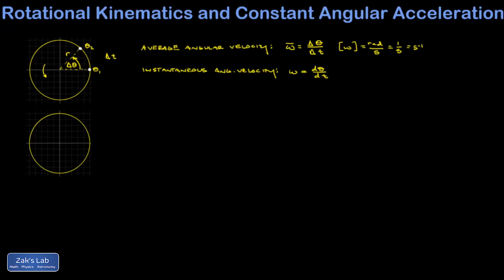The next step I want to take is to allow my rigid body to spin faster. Perhaps I look at some moment in time and my paint spot is here. And at that moment in time, I have an instantaneous angular speed of omega 1. Then I watch for a moment as my disk speeds up. And at some later time, my paint spot is here and the instantaneous angular speed is now omega 2.